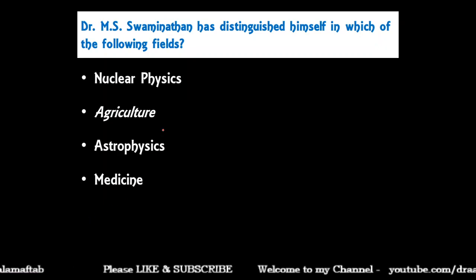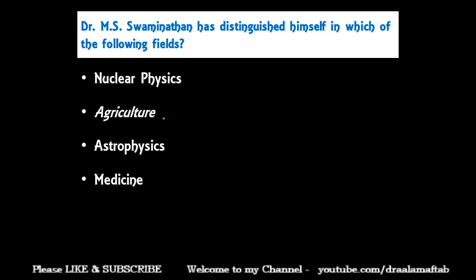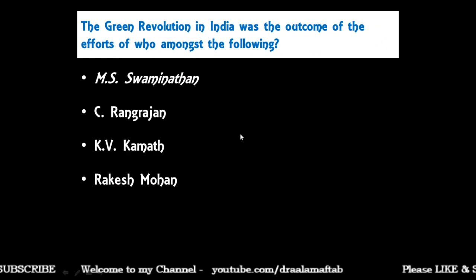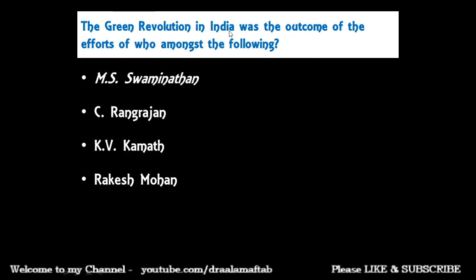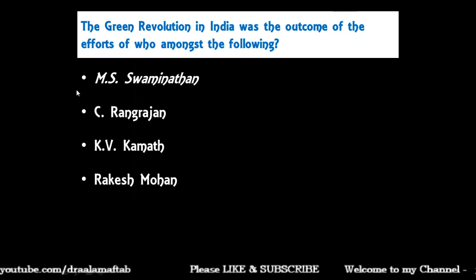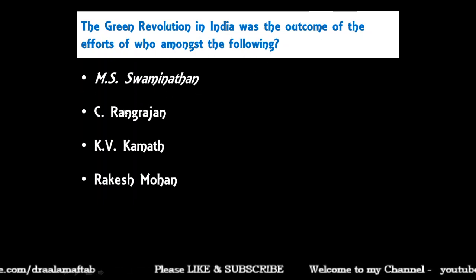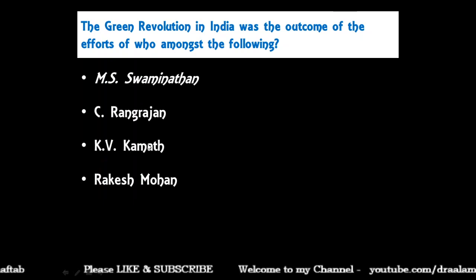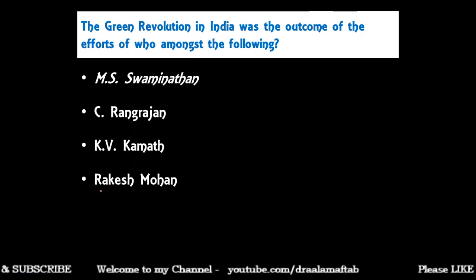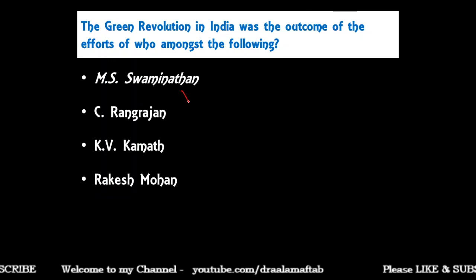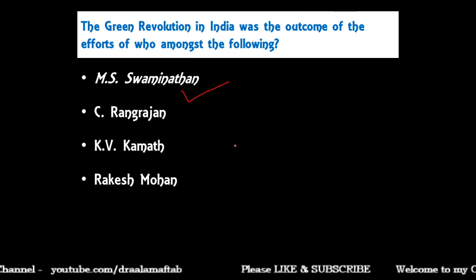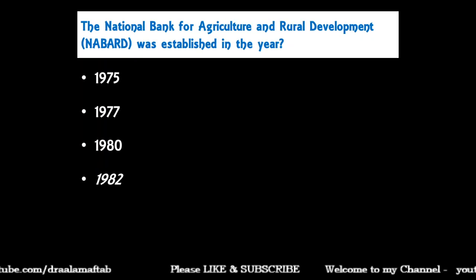M.S. Swaminathan is a distinguished researcher and scientist in the field of agriculture. The next question: the Green Revolution in India was the outcome of efforts of whom? The correct answer is M.S. Swaminathan — he is treated as the person behind the Green Revolution in India.